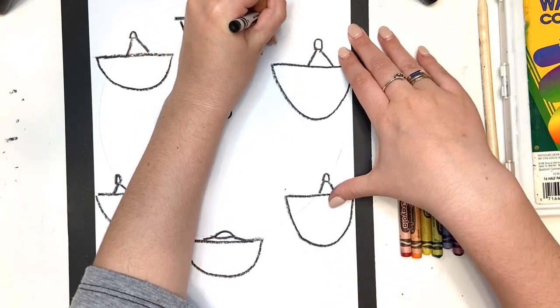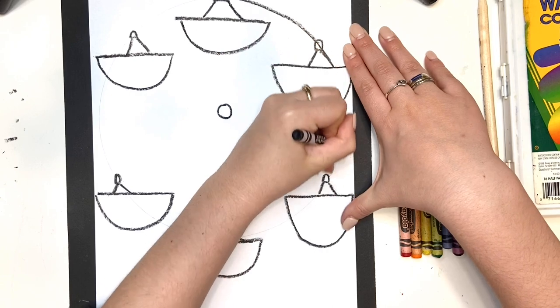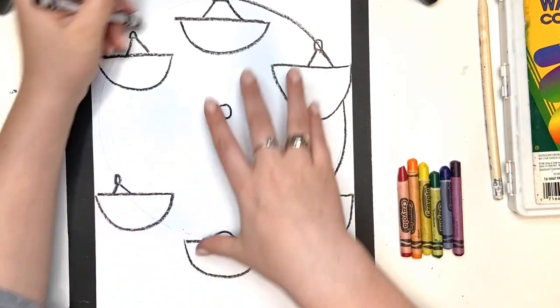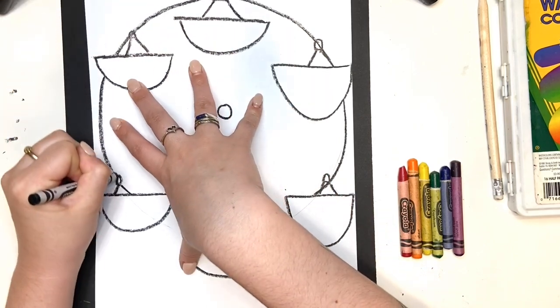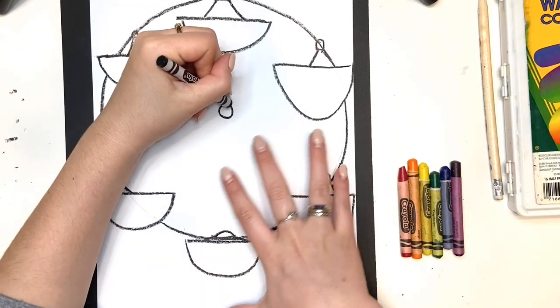Now, I'm going to trace the circle of my ferris wheel, making sure that I go under, so I'm not going to draw through my baskets. That's what's a little bit tricky about this, but I think you guys can do it. The baskets are going in front of the ferris wheel.